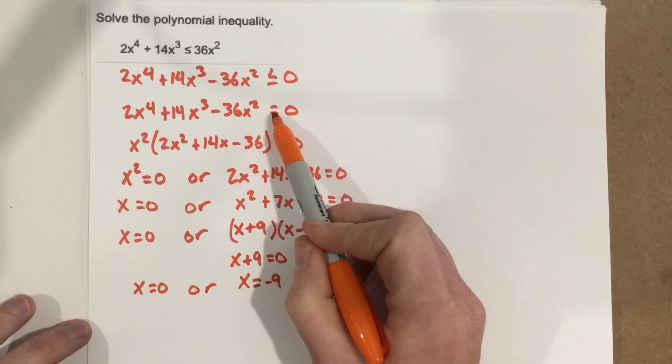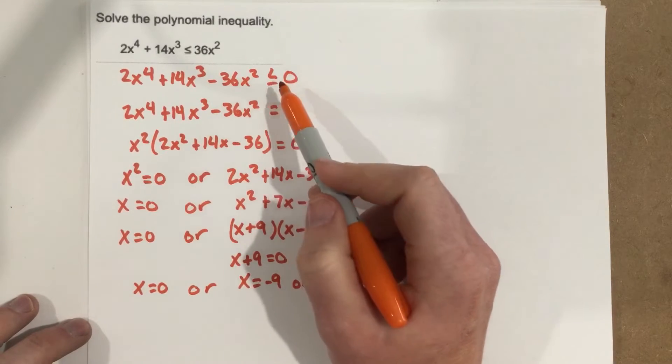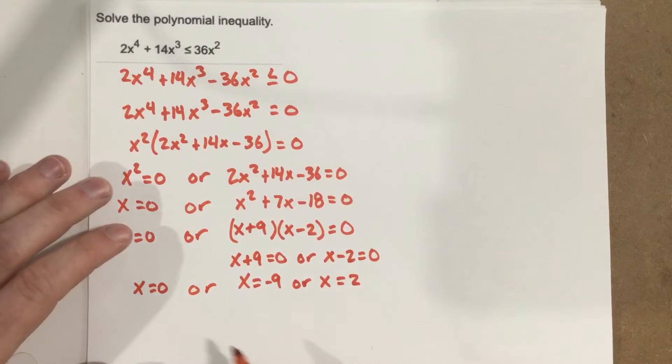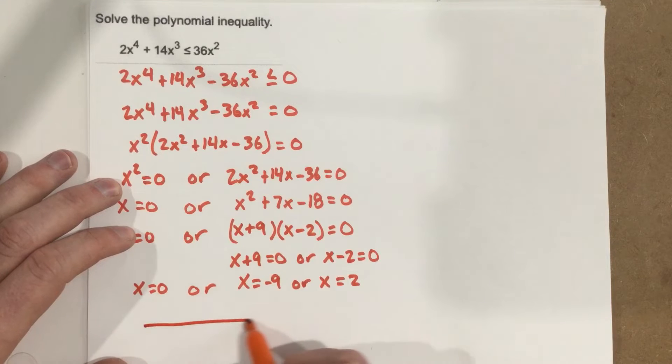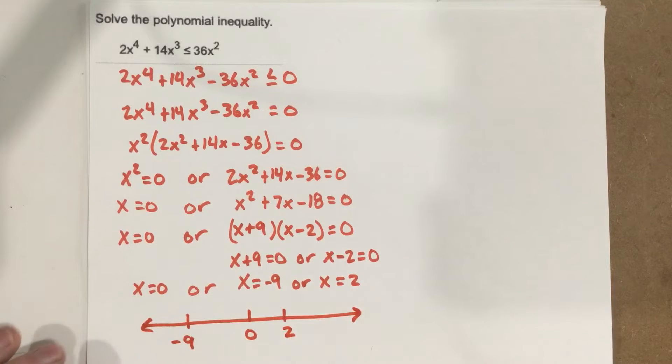Now if this were an equal sign, these would be the solutions. But we don't have an equal sign. We have an inequality sign. So that means we have a range of numbers. So we want to draw a number line. Mark it in order: negative 9, 0, 2. And then I want to look to see, are my solutions in between here? Are they on the outside of here? How do I check that?